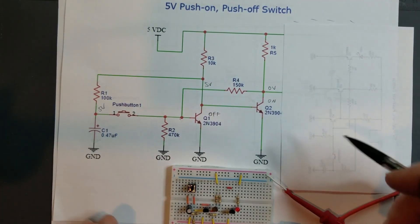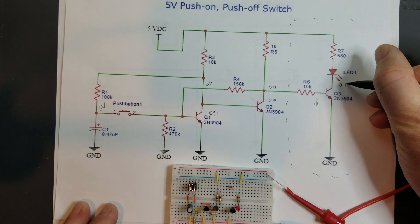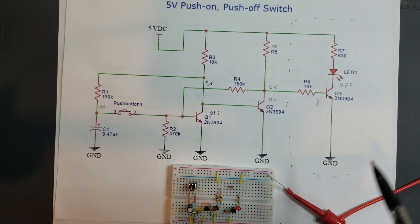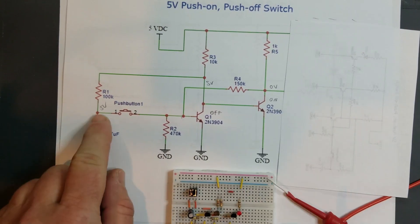This transistor is off, this is being held low. So that's the initial state. You got 5 volts right here. That's the initial state and when this is on, this LED is off.